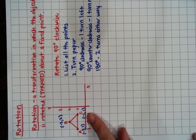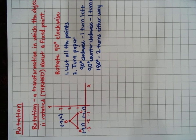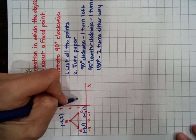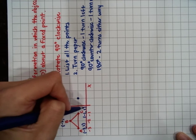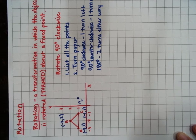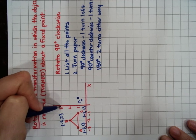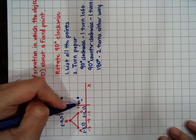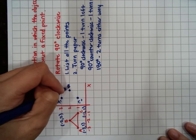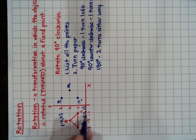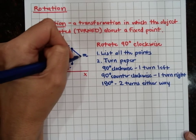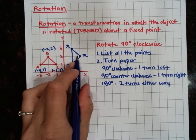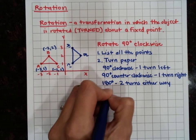Then you just plot the points again with the paper turned. Our points were negative one, positive one — graph that, and that's C prime. A is negative three, one — go to negative three on x, up one, that's A prime. B prime is negative two, positive two — graph those exact points with your graph turned, then turn it back and see your triangle rotated 90 degrees clockwise.